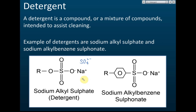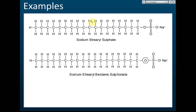For more expensive detergents, potassium or ammonium may be used. A specific example is sodium stearyl sulfate — stearyl is the saturated carbon chain with 17 carbons. Another example is sodium stearyl benzene sulfonate. These are two specific examples of detergents.